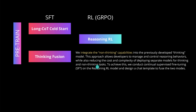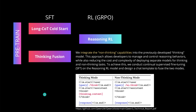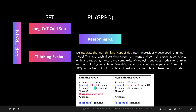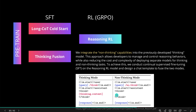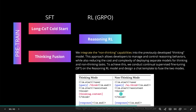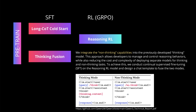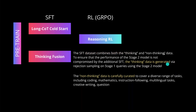The goal is to reduce the cost and complexity of deploying separate models for thinking and non-thinking tasks, resulting in one model that can do both. They conduct continual supervised fine-tuning on the reasoning model and design a chat template to fuse the two modes. From the technical report: the thinking mode includes thinking content, while the non-thinking mode uses a 'no thinking' label with the thinking content simply missing - that's all.